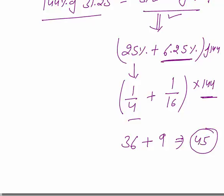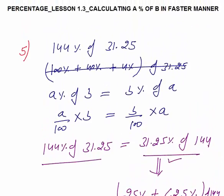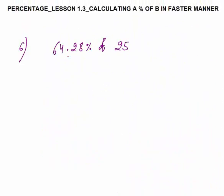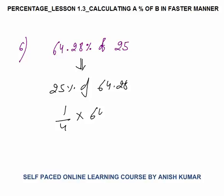So in this way we can easily solve this kind of question. Very important: A percent of B is always equal to B percent of A. Question 6 is 64.28 percent of 25. Rather than doing this directly, I will do 25 percent of 64.28 by applying the same concept. This is very simple — one-fourth of 64.28 is 16.07. So in a very faster manner, I can calculate the answer as 16.07.